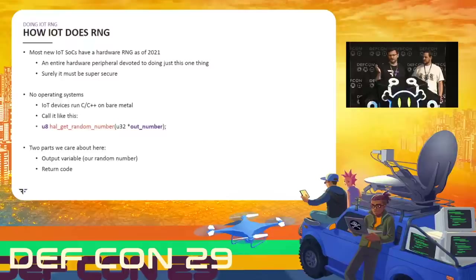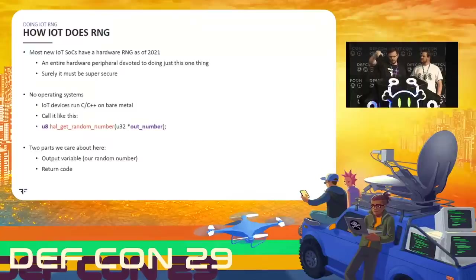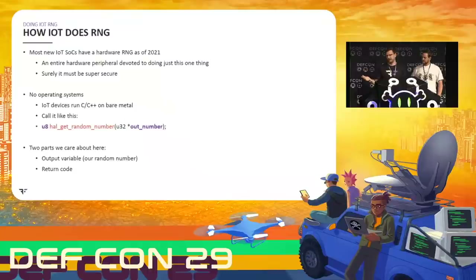So you're basically given something like a HAL function — a hardware abstraction layer function — that says here's how you call the RNG. It's a C function called something like HAL_get_random_number. It'll have an output variable — which is a bit weird if you're not familiar with C — a pointer to a region in memory where it should put the results. It's usually a 32-bit number. And then it'll return an error code, whatever that happens to be — a Boolean, an unsigned 8-bit integer, whatever.